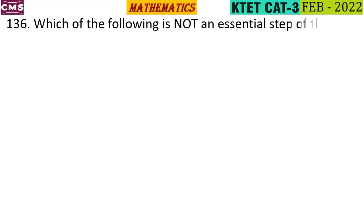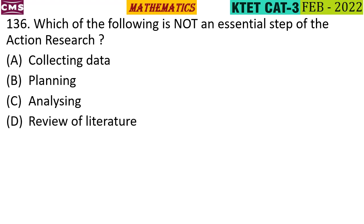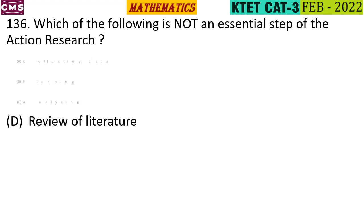Which of the following is not an essential step of action research? The steps listed are: collecting data, planning, analysis, and review of literature. The correct answer is option D — review of literature.